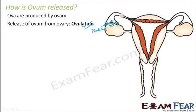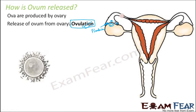Ovulation is an extremely important process. If ovulation is not taking place properly in any female, she might face reproductive issues and problems in conceiving.